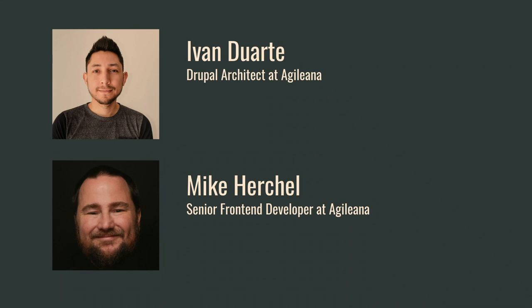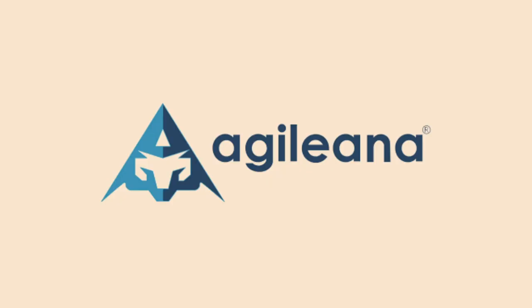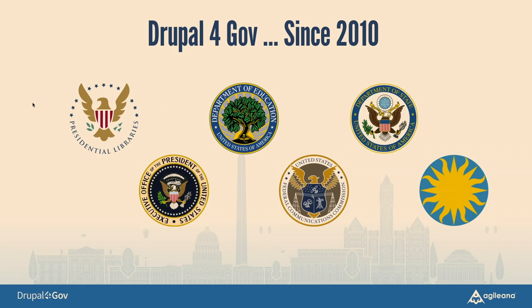My name is Mike Herschel. I'm a senior front-end dev at Agilina. I do a lot of core contribution. I work a lot with single directory components, getting that into Drupal core. I've done a lot with the Olivero theme, getting that into Drupal core, and miscellaneous other things. We both work for Agilina, which is one of the sponsors for Drupal GovCon. Agilina is a company that does a lot of large federal projects.